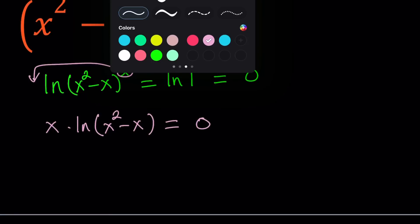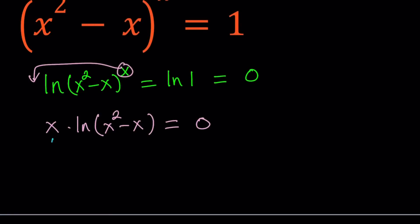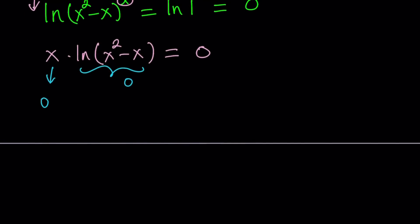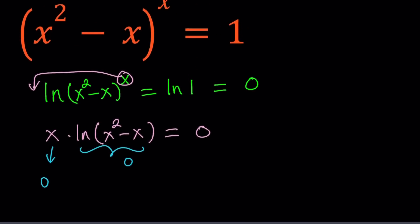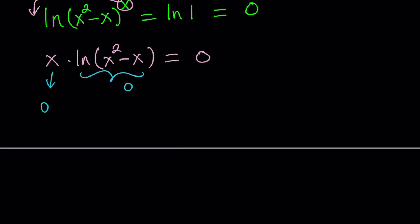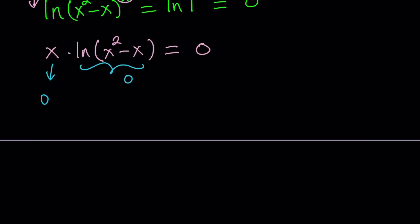And from here we get the following: x can be 0 or this can be 0. If x is 0 we run into a problem because 0 to the power 0 does not equal 1. So x equals 0 is not going to be accepted. We're going to go with the other solutions.